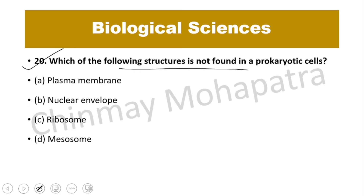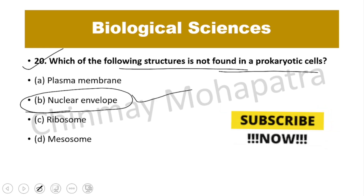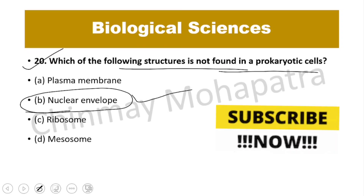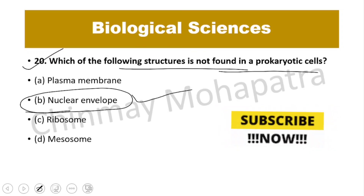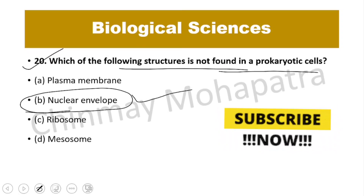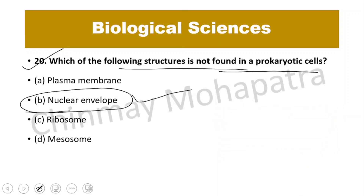Question number 20: Which structure is not found in prokaryotic cells? The answer is the nuclear envelope. In prokaryotes (pro = primitive, karyon = nucleus), there is no well-organized nucleus; the chromatin material is open in the cell without any specific nuclear envelope. So the right answer is option B.